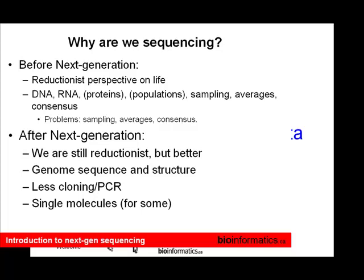Before next-generation sequencing, in the Sanger world — be it capillary or gel-based — we definitely had a simplistic idea of what a genome was and how much information we could get from it. We figured if we got all the pieces and all the parts, we'd figure out the organism.